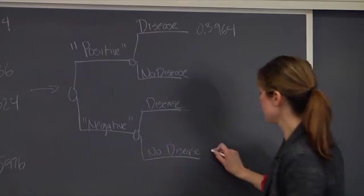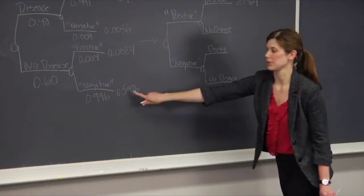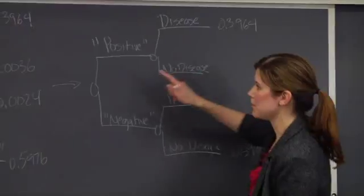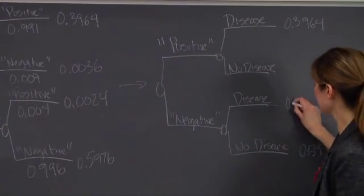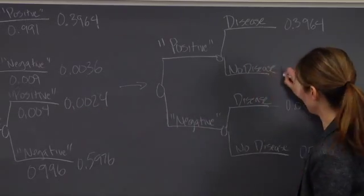Same thing for the bottom branch, 0.5976. This is the same number as over here. And then again, the two middle branches flip. So 0.0036 goes here, and 0.0024 goes here.